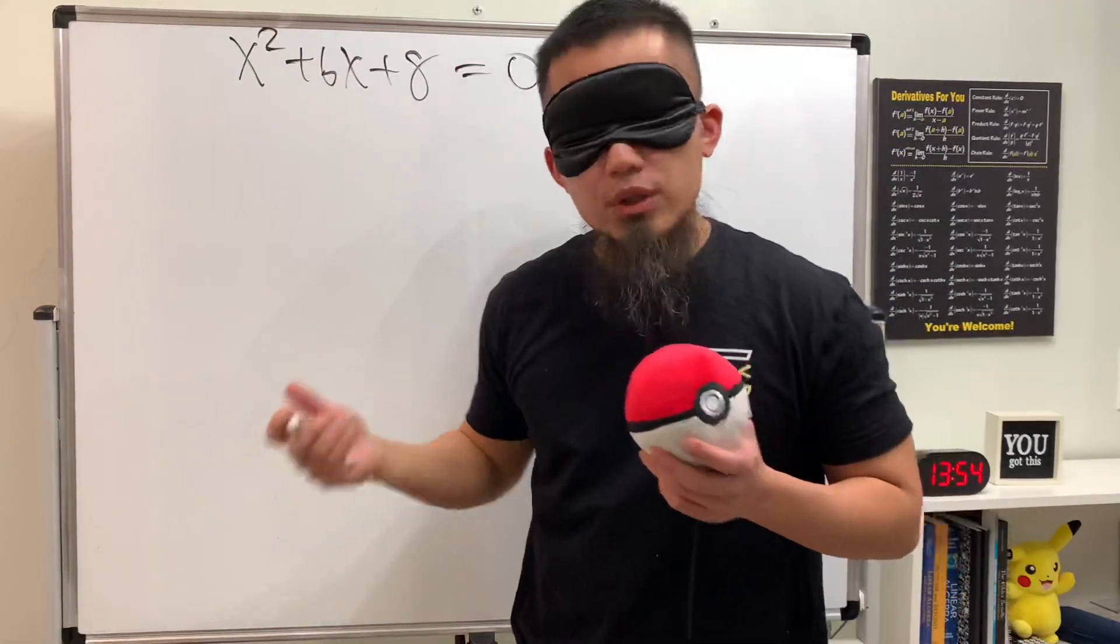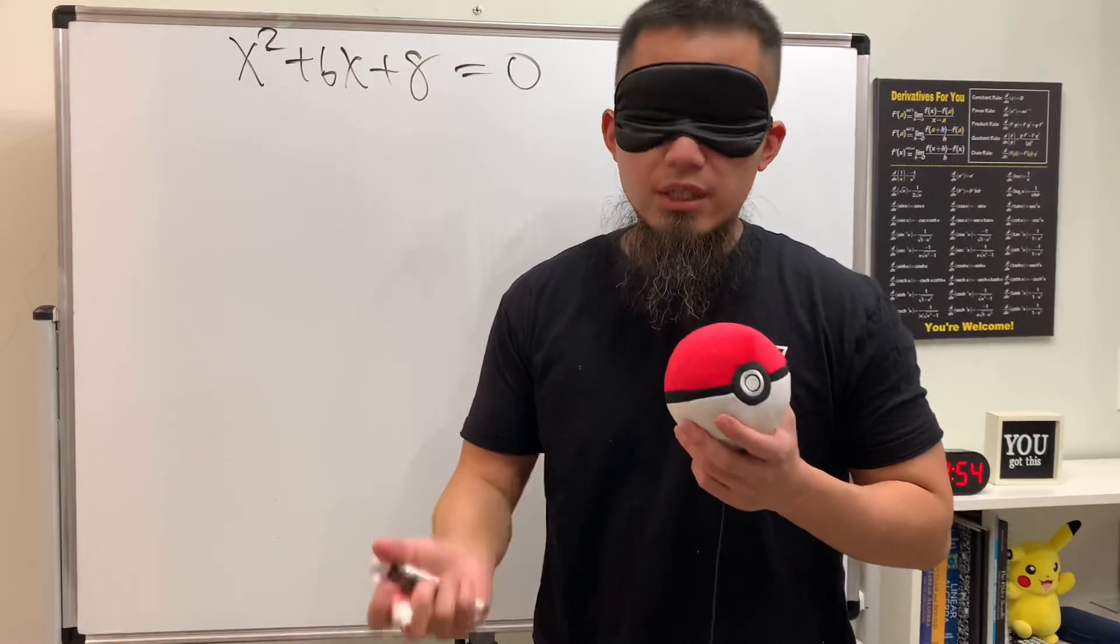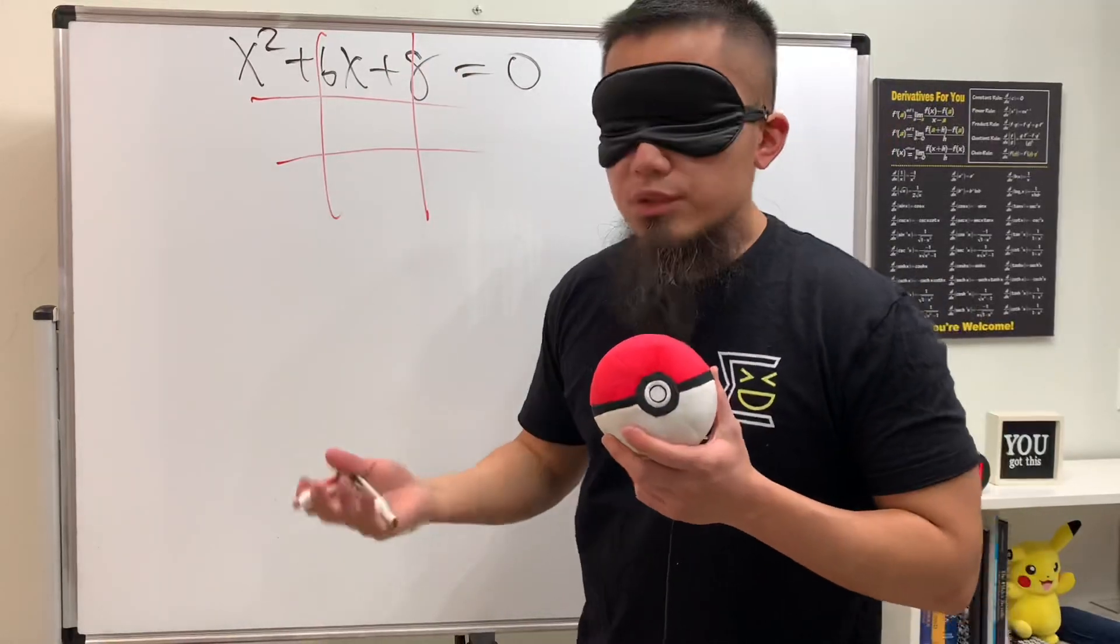Well, to solve this we can do factoring, and I'll show you the tic-tac-toe method. So to do that, we'll do the tic-tac-toe right here. As you can see, we need to have x times x to get the x².